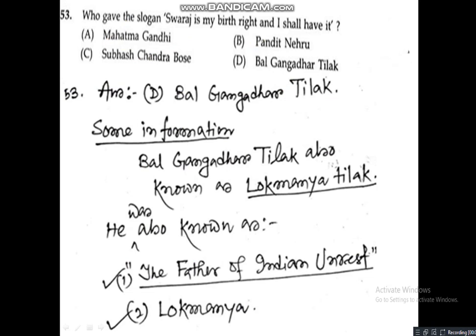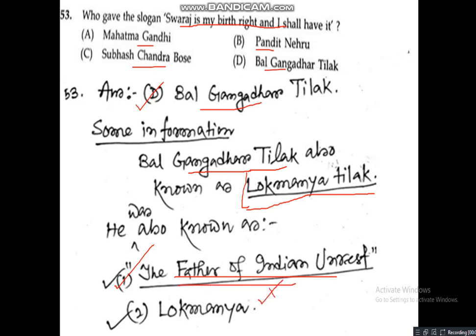Question 53 is a history question: Who gave the slogan 'Swaraj is my birthright and I shall have it'? Option A: Mahatma Gandhi, Option B: Pandit Nehru, Option C: Subhas Chandra Bose (Netaji), Option D: Bal Gangadhar Tilak. Answer is Option D — Bal Gangadhar Tilak. He is also known as Lokmanya Tilak and was called the 'Father of Indian Unrest' — two important titles to remember.